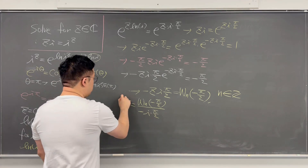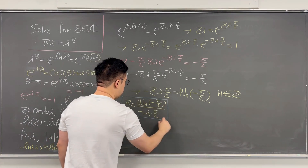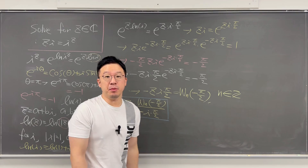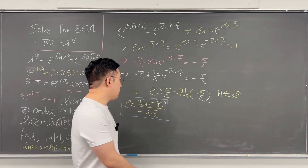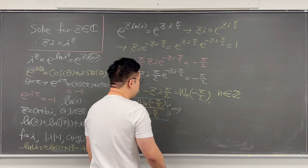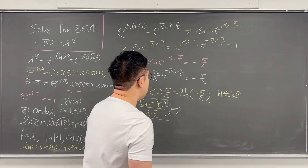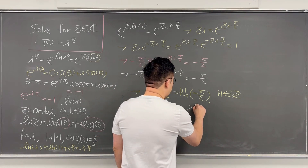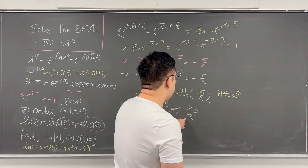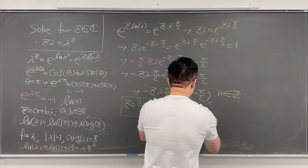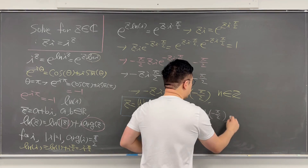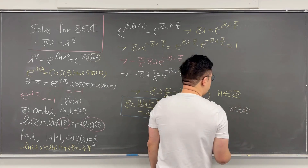This is the solution. If we want to simplify, we can multiply i to both the numerator and denominator, giving us z equals 2i over pi times Lambert W_n of negative pi/2, where n is an integer.